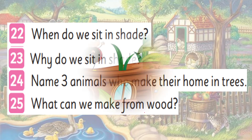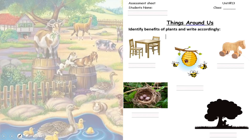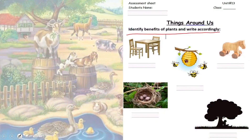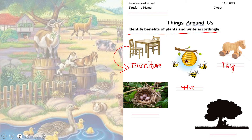Now for practice, you can download this worksheet from the description box below this video, or you can get it in print from your teacher. Write down your name, your class, and 'Things Around Us.' The activity says: identify benefits of plants and write accordingly. Plants give us furniture. Bee makes its hive in trees. We make toys from wood. Birds make their nest in trees. Plants also give us shade. These are some benefits of plants — for human beings and animals both.